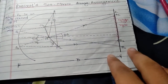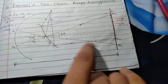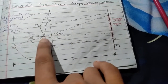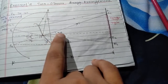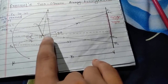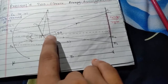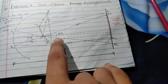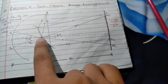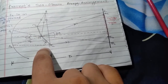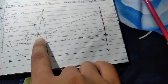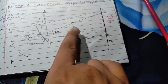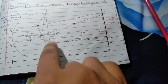MB1 is the reflected ray from mirror M1 and MA2 is the reflected ray from mirror M2. The angle between A2 and B1 is equal to twice the angle between the mirrors. Since both mirrors are inclined at theta, the angle between A2 and B1 is equal to 2 theta.